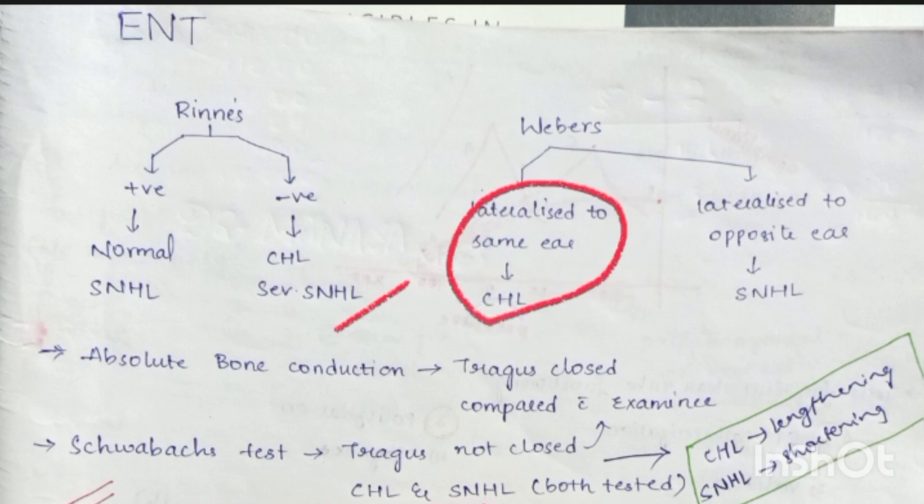In Weber's test, it is lateralized to the same ear in conductive hearing loss, and lateralized to the opposite ear in sensorineural hearing loss.